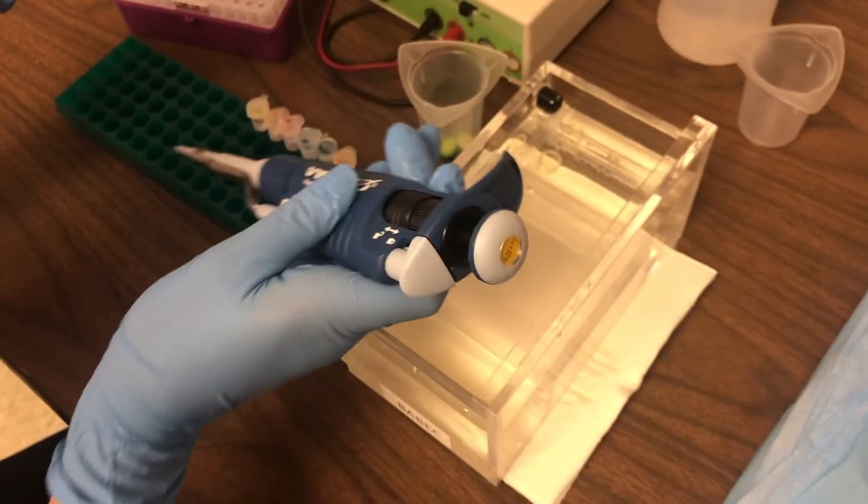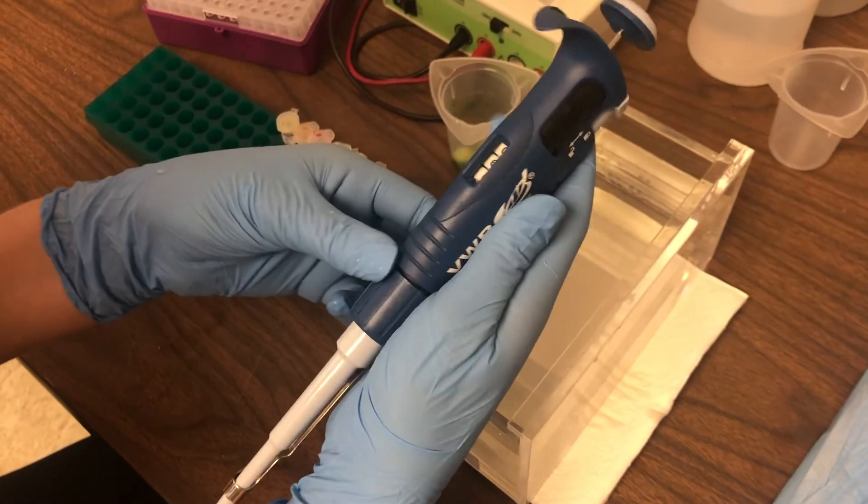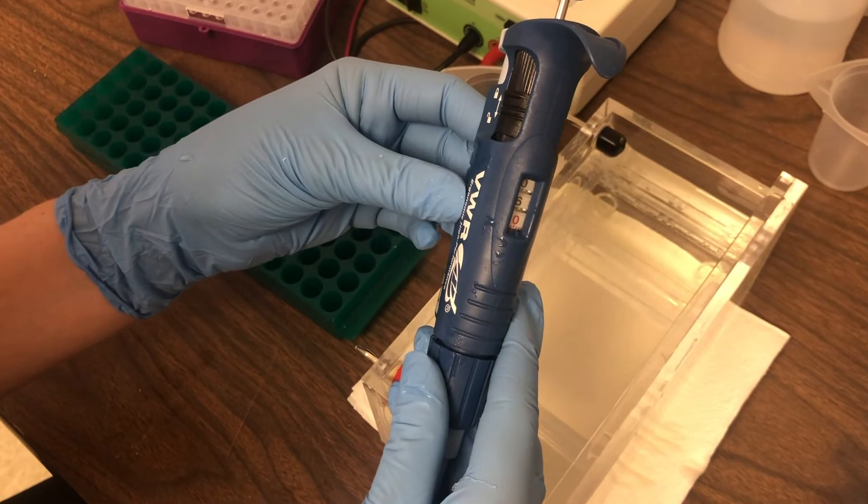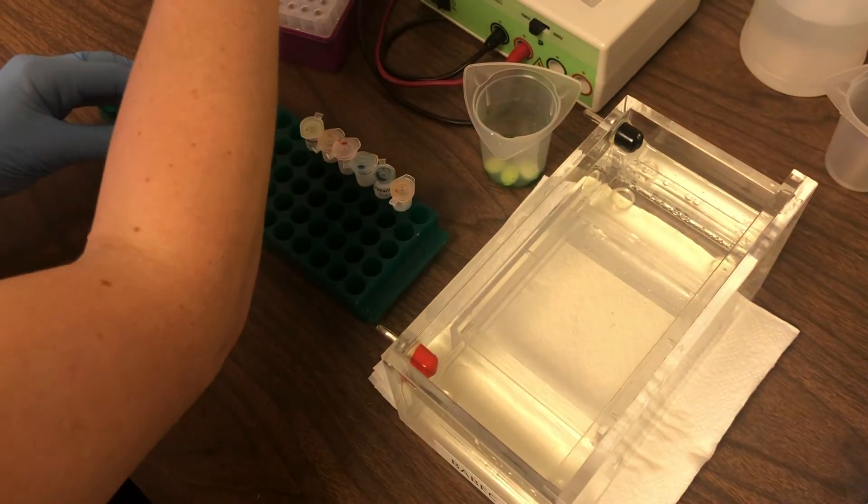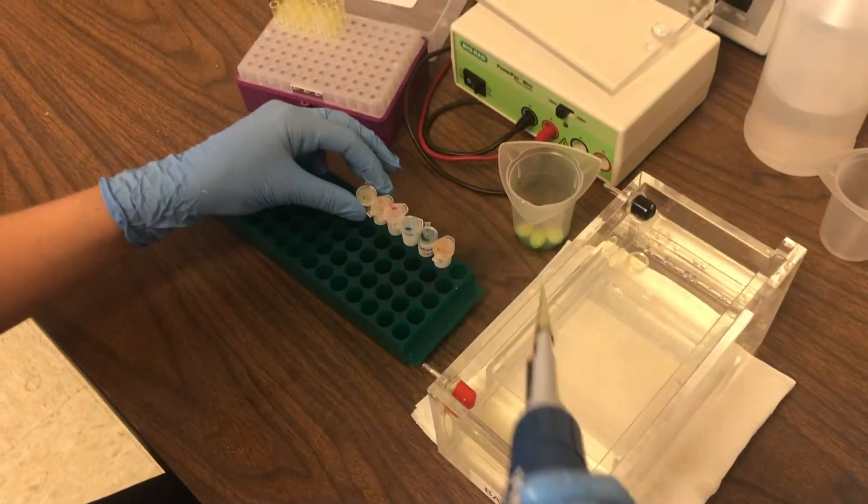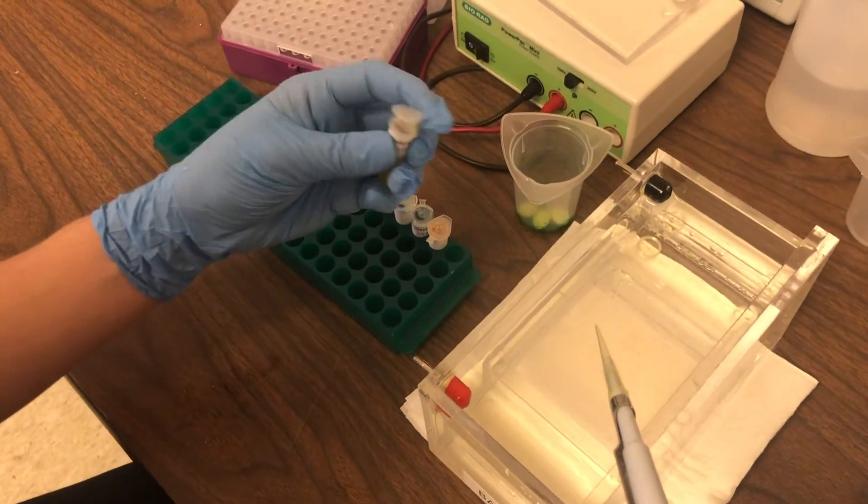Grab our P20 micropipette and set the volume to 6 microliters. Get a tip onto our micropipette and we are ready to load our samples.